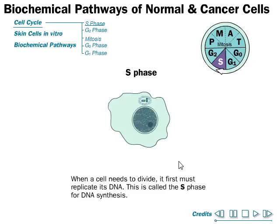Let us discuss the biochemical pathways of normal and cancerous cells and how they differ, because by looking at these pathways we can distinguish between the functionality of those cells and track down how cancer is formed.